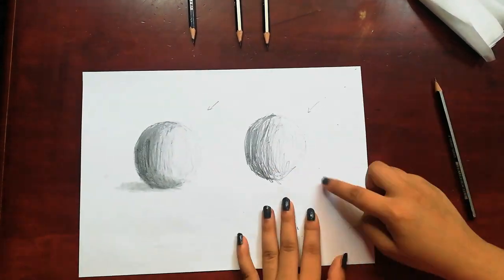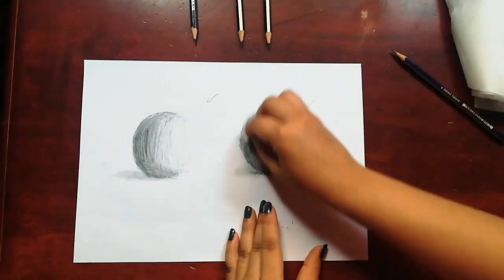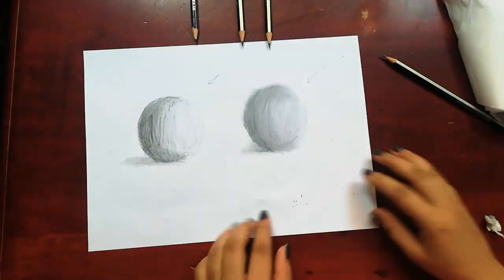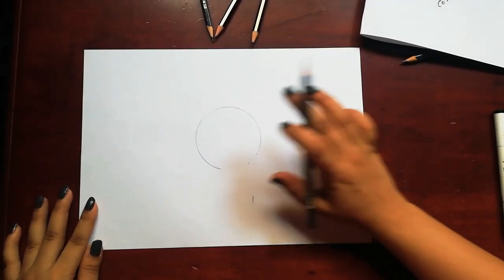You can see in the second object I've used tissue paper and you can see the difference. Now I'll show you the second part. I'll show you how to add value to an object while shading.